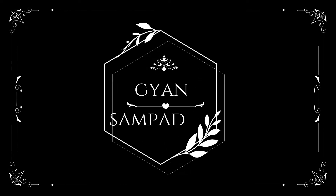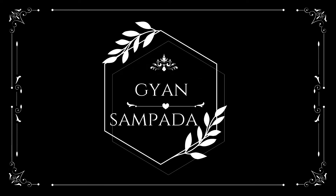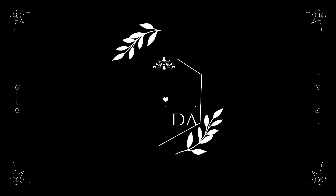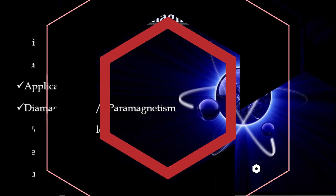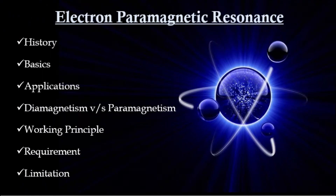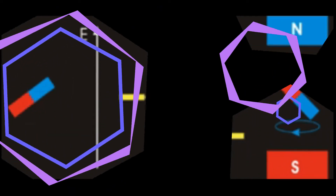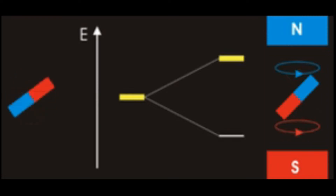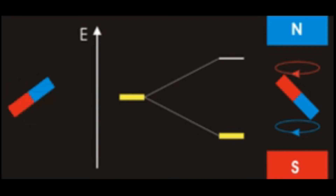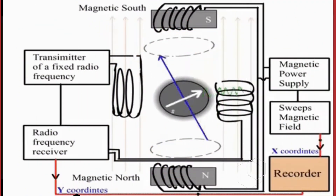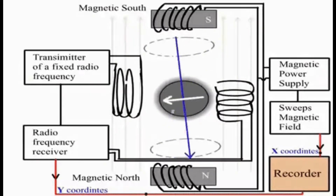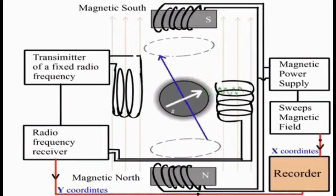Hello everyone and welcome back to my channel Gyan Sampata. In our previous class on magnetic resonance we discussed ESR, that is electron spin resonance, and we saw that based on the radiation which is absorbed we distinguish mainly two different types of resonance phenomena: one is ESR and another one is NMR. ESR we have already discussed in our previous class and today our class will be dealing with NMR, that is nuclear magnetic resonance.